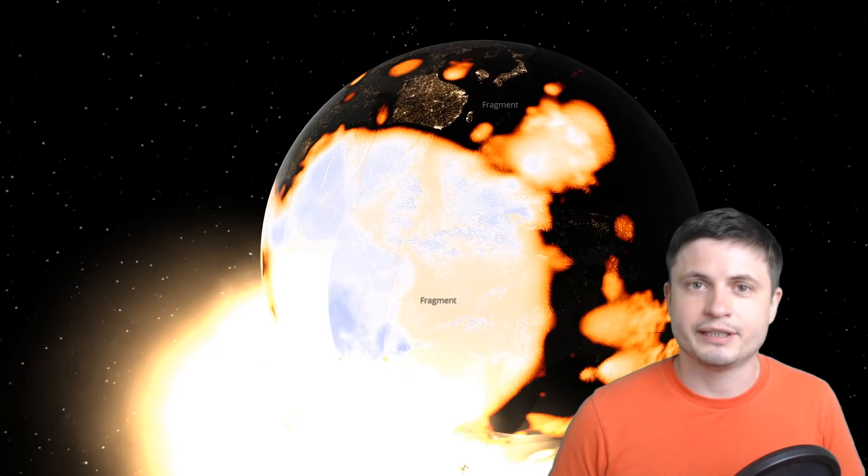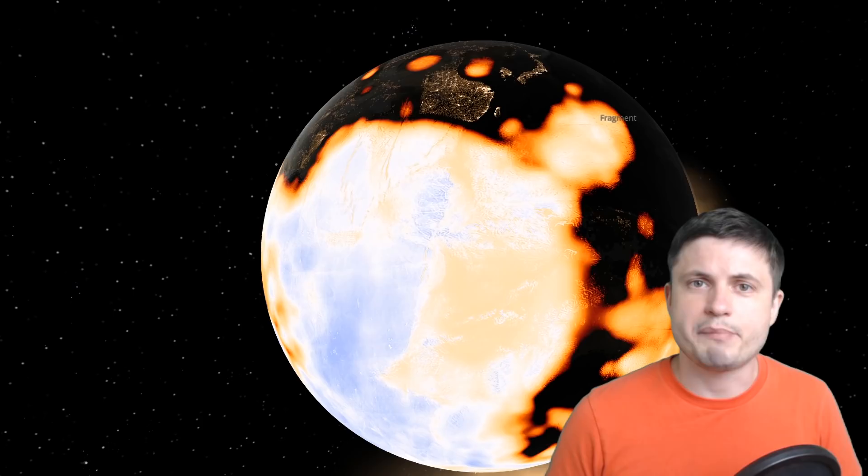More and more studies seem to suggest that having an early impact and also having a moon like our own is really important for the maintenance of habitable conditions on the planet so these impacts could actually be really crucial but not just any impact. Very unique and very specific grazing impacts like you see right here.